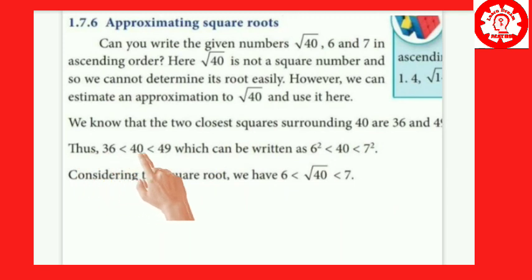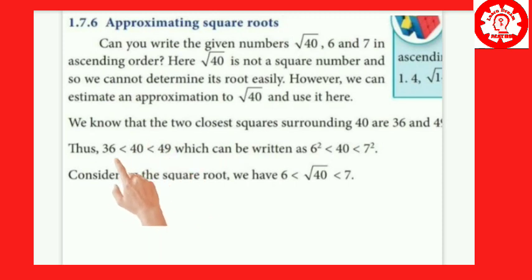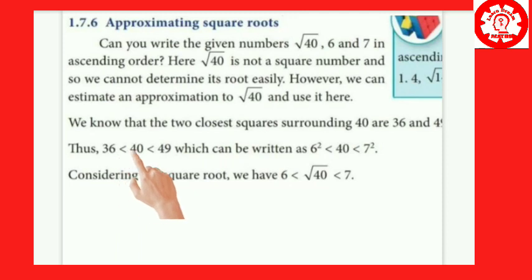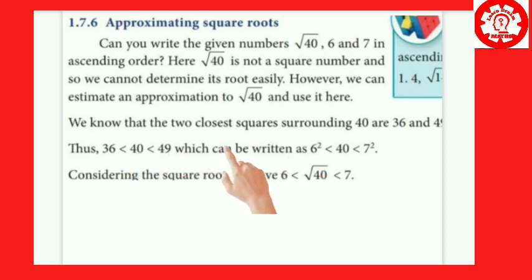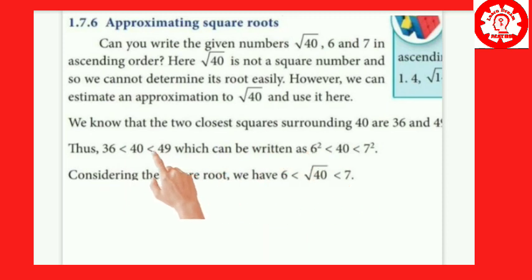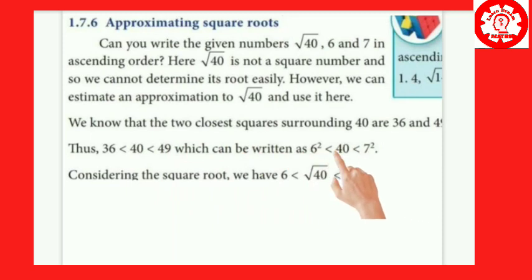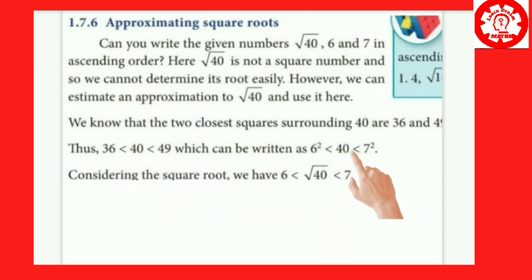Thus, 36 is less than 40 and 40 is less than 49. If you look at it in reverse: 40 is greater than 36 and 40 is less than 49. So this can be written as: since the square root of 36 is 6 and the square root of 49 is 7, root 40 lies between 6 and 7.